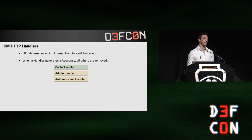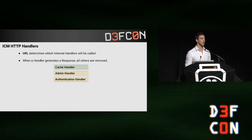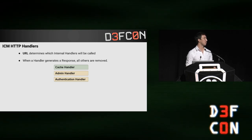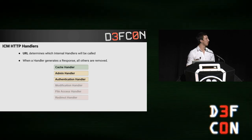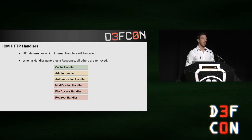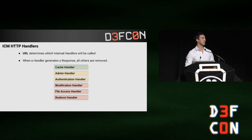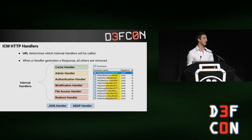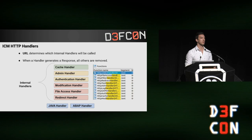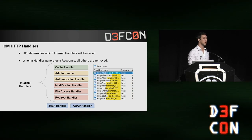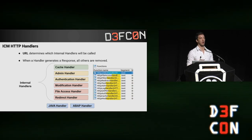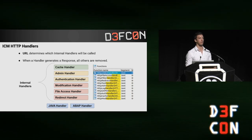The admin handler and authentication handler are both present by default but only called depending on the URL pattern. For the admin handler, the prefix is /sap/admin; for the authentication handler, hard-coded values in the ICM determine inclusion. The modification handler, file access handler, and redirect handler are not present by default — they need to be set in a configuration file before SAP starts. Finally, the Java and ABAP handlers depend on system configuration; they are included by default but don't resolve requests internally — they just forward requests to the worker process.